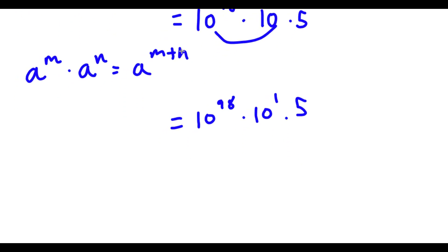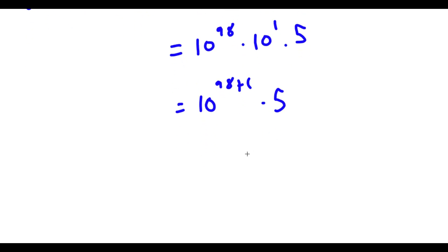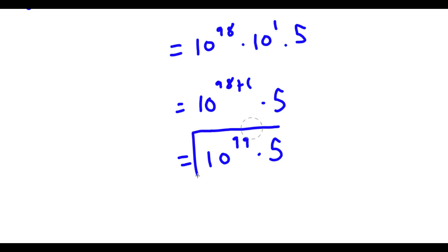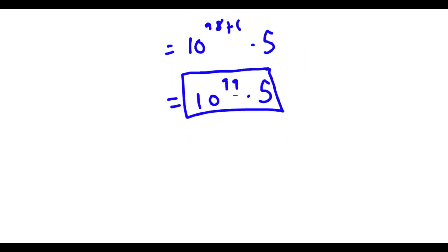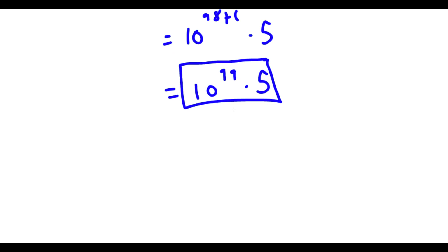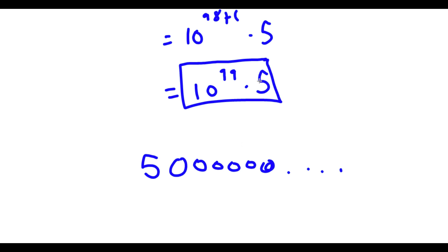Remember, if I'm multiplying these two, I keep the bases the same and simply add the two exponents. 98 plus 1 is going to be 99. So I have 10 to the power of 99 times 5. So this is going to be my answer. And if you're wondering how big of a number this is going to be, this is actually going to be 5 followed with 99 zeros. So that is our answer.